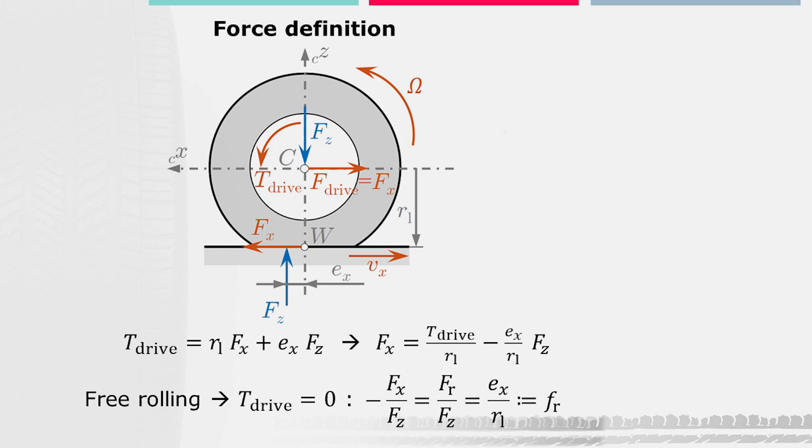By rearranging the torque equilibrium with respect to the longitudinal force, we can see that the second term on the right side of the equation represents a force that reduces the longitudinal force during driving. Now when we consider a freely rolling wheel, which means that a driving torque is equal to zero, we can further simplify this expression. In this case, the remaining longitudinal force becomes a resistance or drag force F-R.